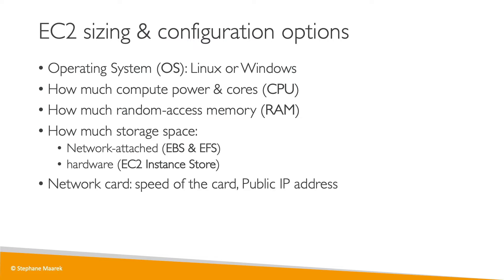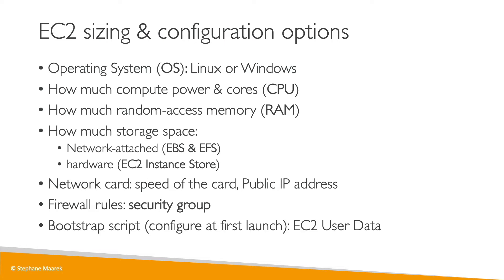Finally, you choose the type of network attached to your EC2 instance — do you want a fast network card, and what kind of public IP do you want? You also need to handle the firewall rules of your EC2 instance, which is the security group. And finally, there is the bootstrap script to configure the instance at first launch, which is called EC2 user data.